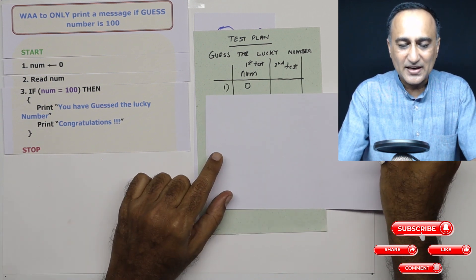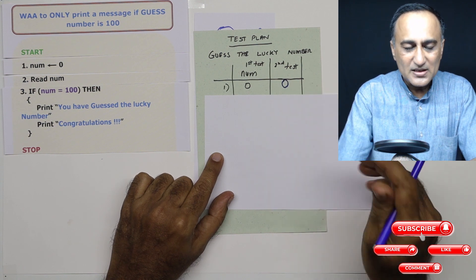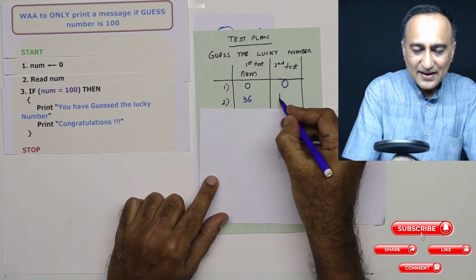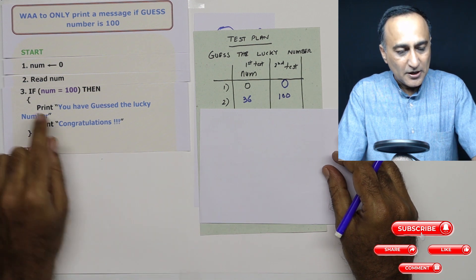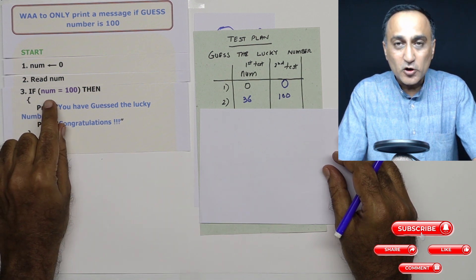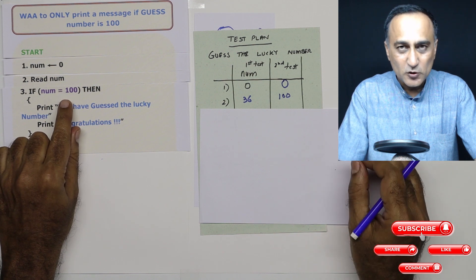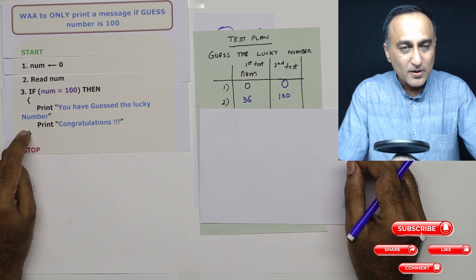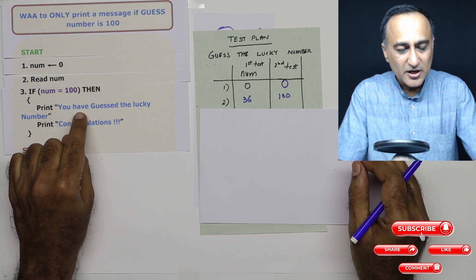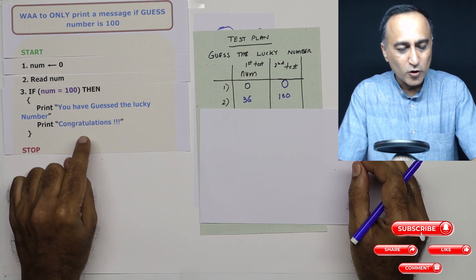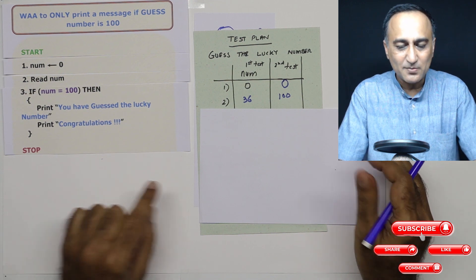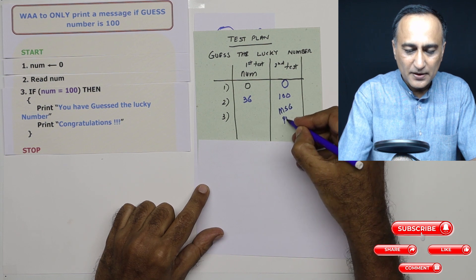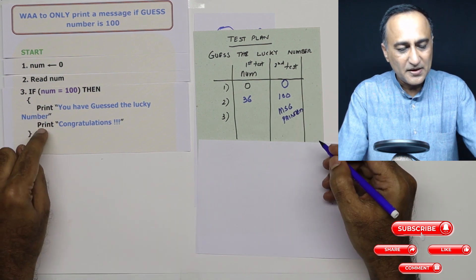Now let's do it once again. Second time, in step one, number is zero. But now when I read a number, let's say I enter 100. When I come to step three, the number is replaced with 100: is 100 equal to 100? Absolutely true. Since this is true, it will come to 'then' and whatever is in the flower bracket will get executed. So it will print the message 'You have guessed the lucky number', followed on the next line by 'Congratulations', and then come to a stop. So in the second case, a message will be printed.